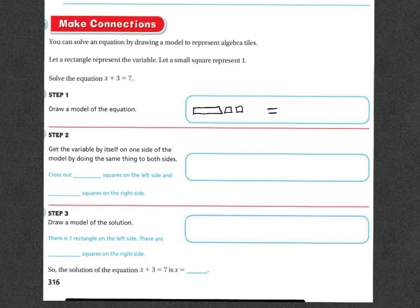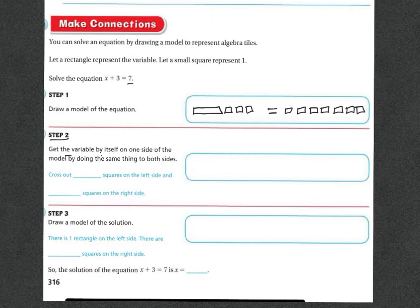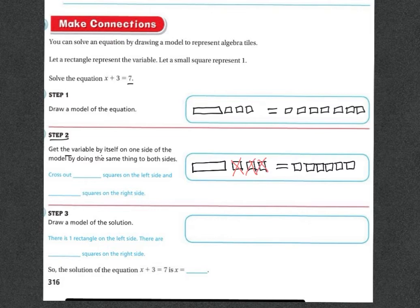I draw 3 squares for the one-tiles — 1, 2, 3. Then on the right side of the equation I have 7 individual squares: 1, 2, 3, 4, 5, 6, 7. Step 2: get the variable by itself on one side of the model by doing the same thing to both sides. In order to get this variable alone, I have to get rid of these 3 one-tiles — 1, 2, 3. So now my X is alone on this side.